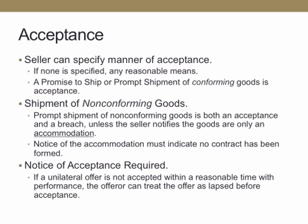Acceptance. Under the UCC, a seller can specify the manner of acceptance. If none is specified, any reasonable means will do. A promise to ship or a prompt shipment of conforming goods is considered acceptance. Shipment of non-conforming goods — meaning the goods don't conform to the contract — means prompt shipment of non-conforming goods is both an acceptance and a breach. It's the shipper's indication that they accept, but if it's non-conforming, it's a breach, unless the seller notifies the goods are only an accommodation. This notice of accommodation must indicate that it isn't to form a contract, but instead is an accommodation.